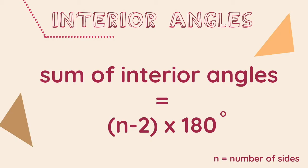N is the number of sides. Take away two — this gives us how many triangles can fit inside the polygon. We then multiply this by 180. The formula is (N - 2) × 180.